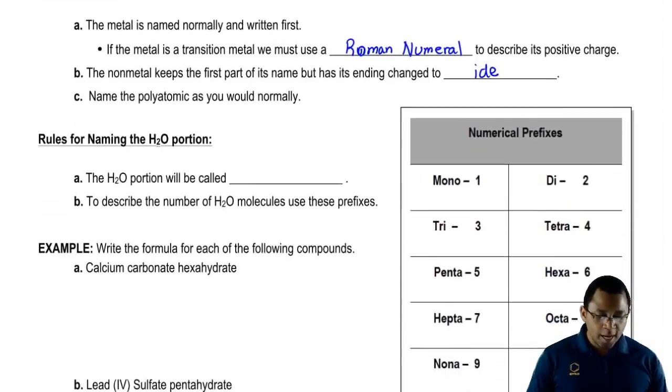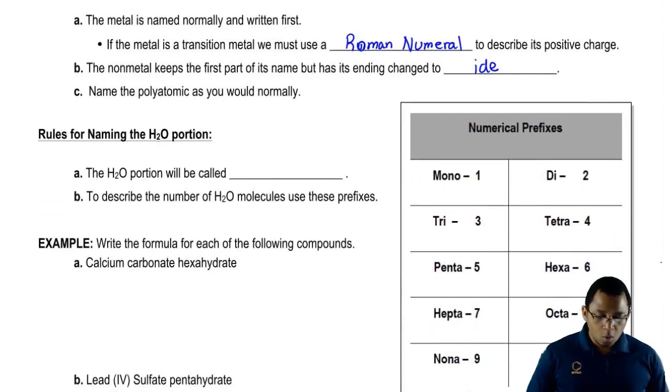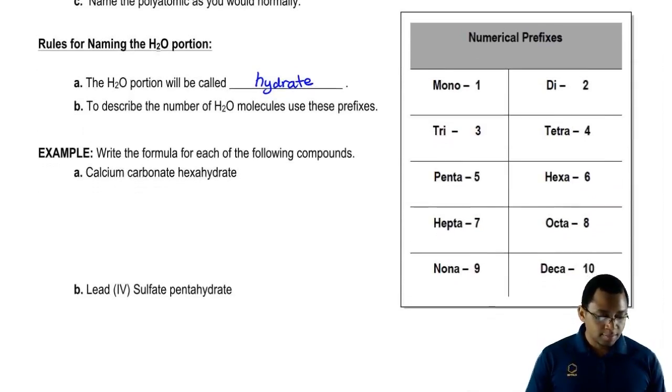Now we have to introduce rules when it comes to the water portion. The water portion will be called a hydrate. To describe the number of water molecules around the ionic compound, we have to use these numerical prefixes that we have on our right.